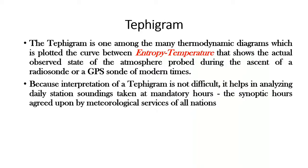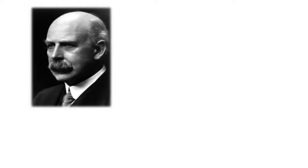Because interpretation of a tephigram is not difficult, it helps in analyzing daily station soundings taken at mandatory hours — the synoptic hours — agreed upon by meteorological services of all nations. Sir Napier Shaw first used this diagram in meteorology and named it the tephigram.